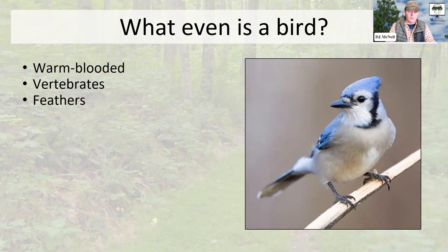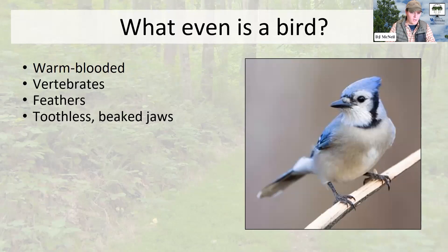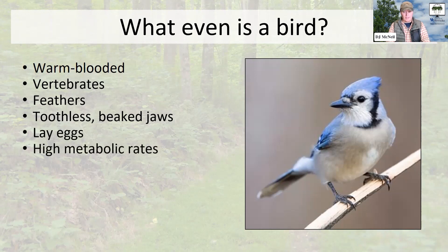Birds are all characterized by feathers in some capacity. No species of bird has hair. There are some birds that have hair-like feathers, but feathers are a bird characteristic, at least in terms of contemporary vertebrates. They have toothless beaked jaws, so we know that birds have beaks, and not a single extant bird has teeth. Birds lay eggs, of course.